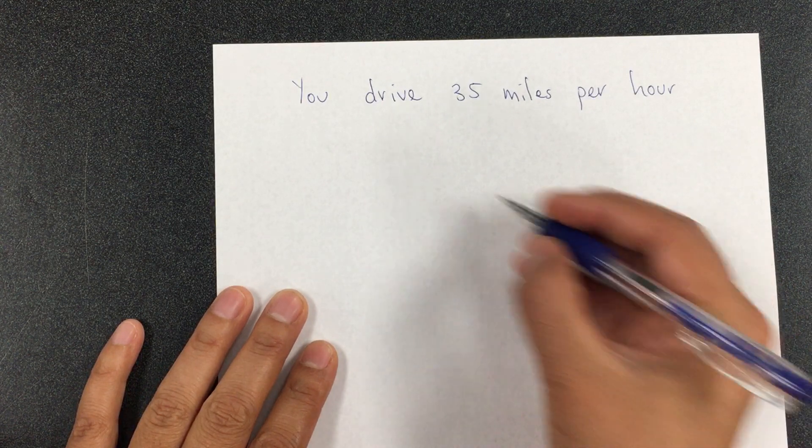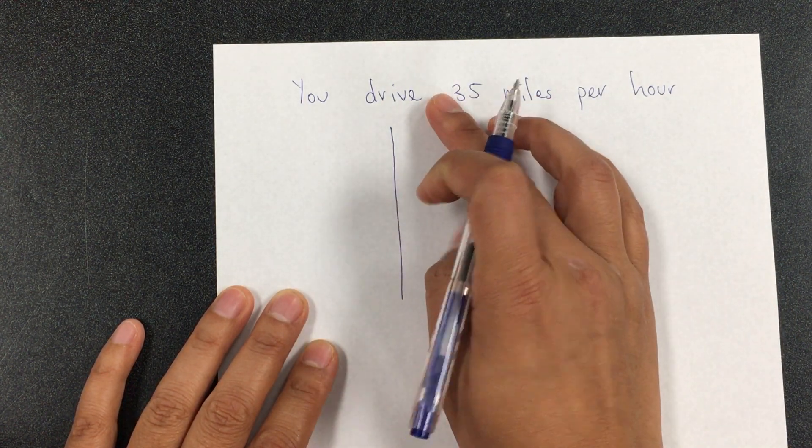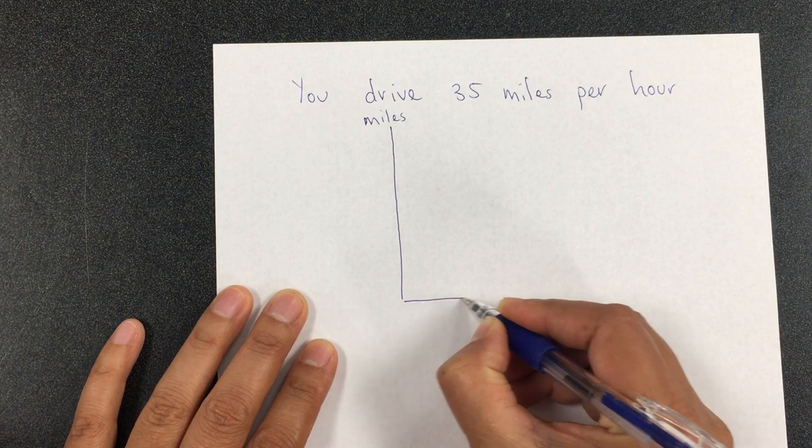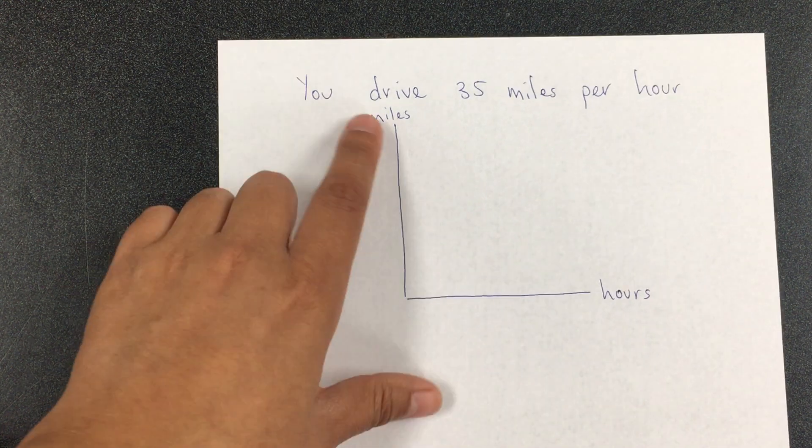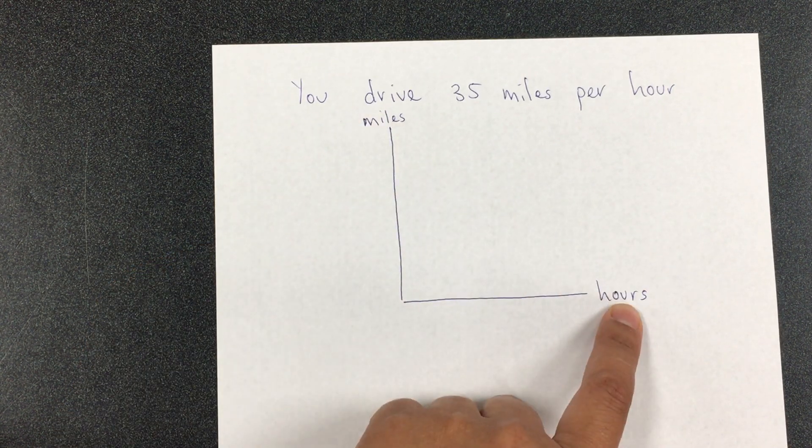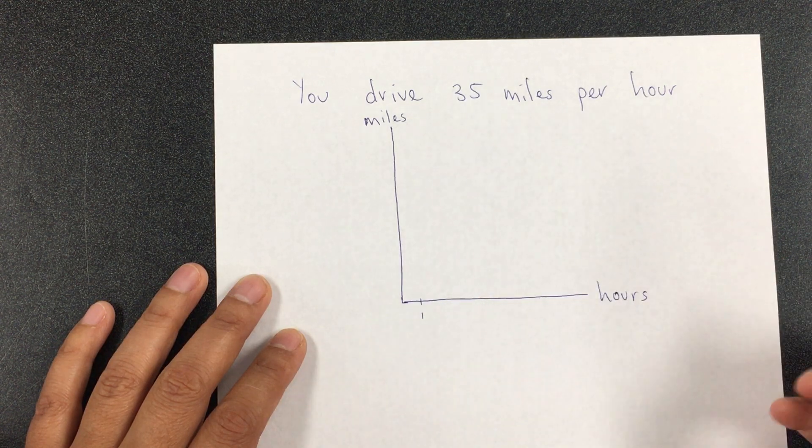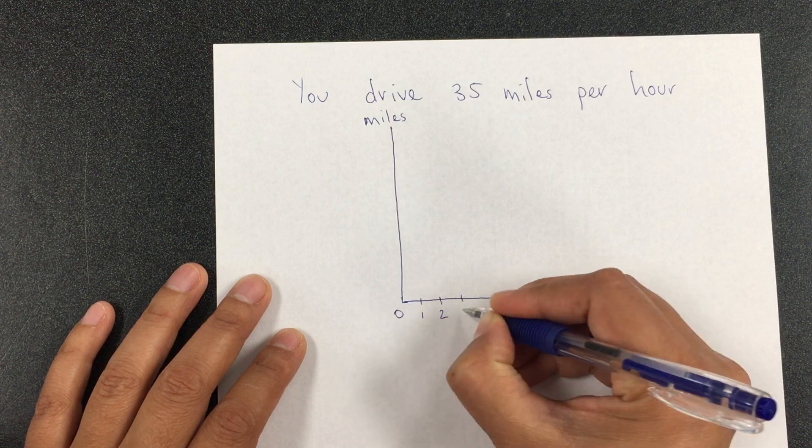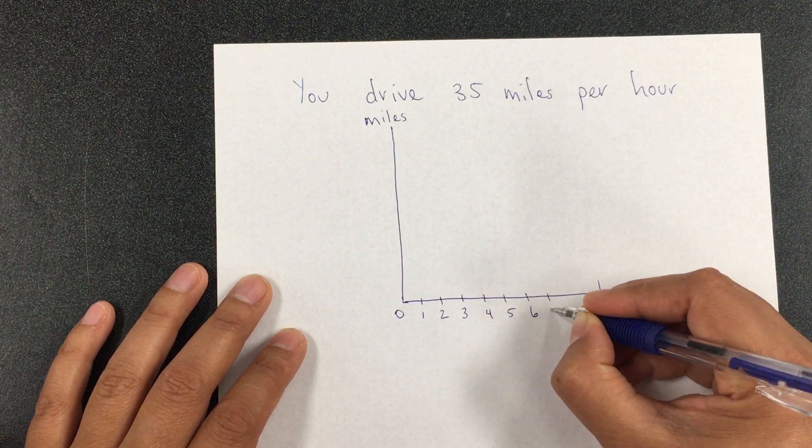On the y-axis, we're going to write the miles. And then, on the x-axis, we're going to put the hours. Remember that this is dependent on this one. The miles that you drive depend on how many hours you've been driving. We're going to put the appropriate units: 0 hours, 1 hour, 2 hours, 3 hours, 4 hours, 5 hours, 6 hours, etc.